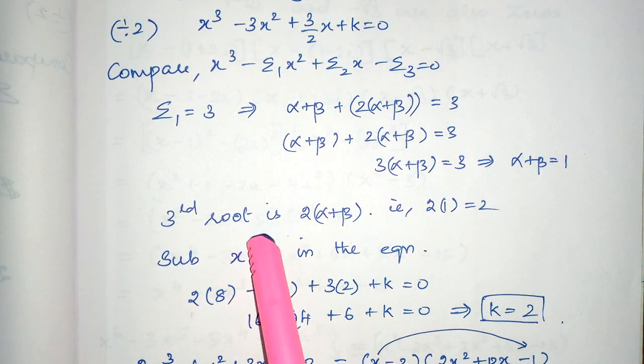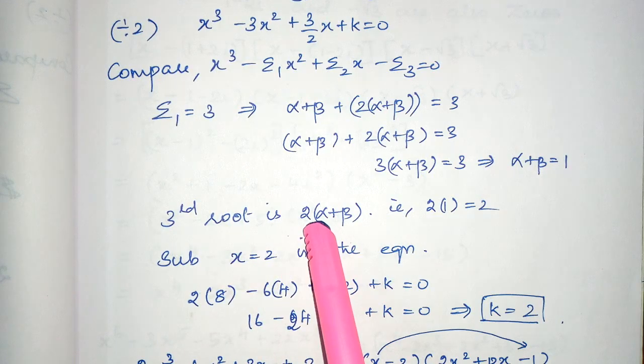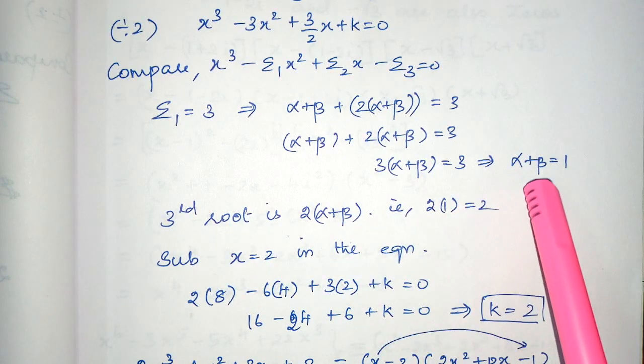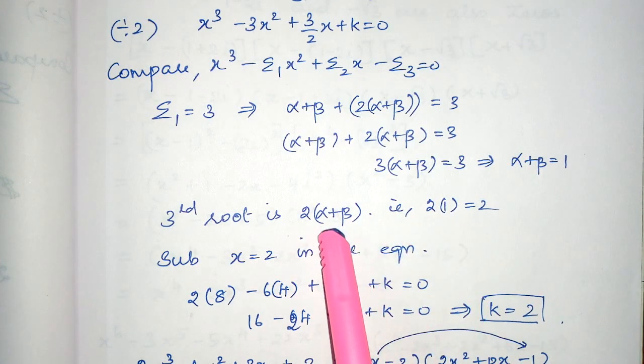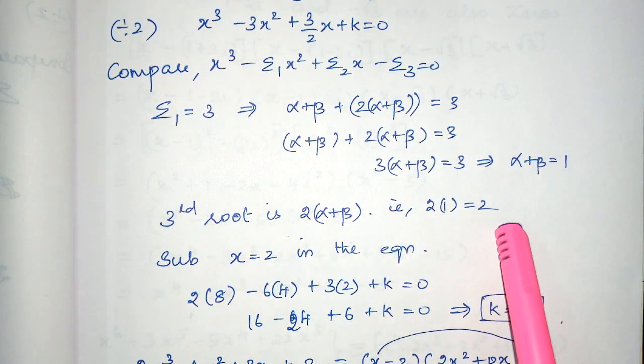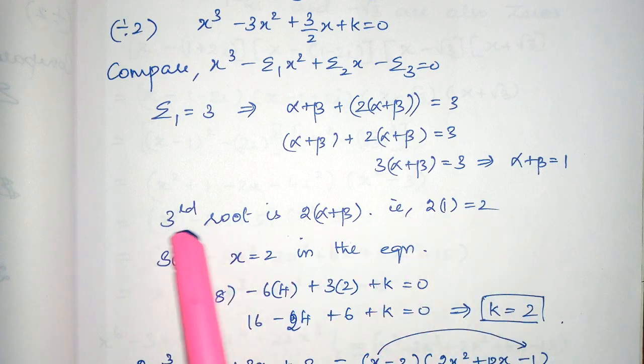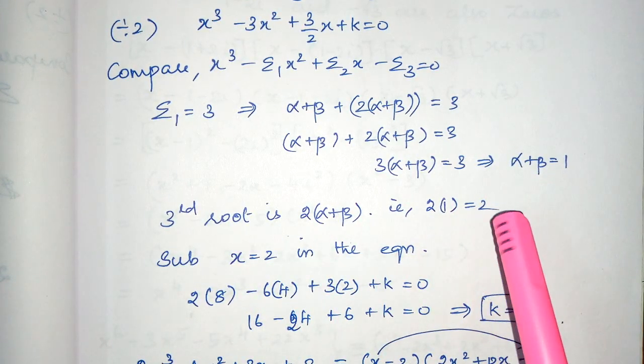Now, you know the third root. Third root is nothing but 2 into alpha plus beta. We found the value of alpha plus beta is 1, so 2 into 1, 2 into 1 is equal to 2. Therefore, the third root is nothing but 2.